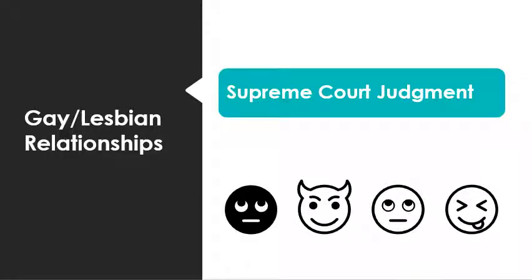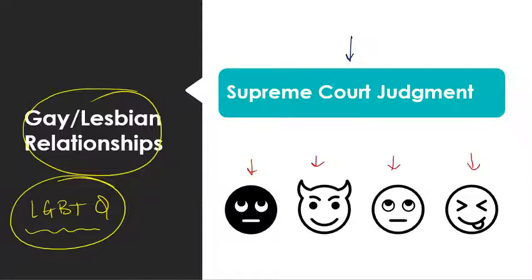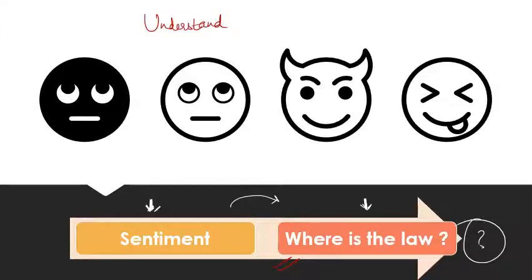You must be aware that around two years ago there was a Supreme Court judgment on the subject of gay and lesbian relationships and the LGBTQ community. There are very diverse opinions on this matter, and the Supreme Court had pronounced a judgment. Now I want to ask: where is the law for this sentiment? How do you start to locate the law? In this video we are trying to understand, find, and interpret the law.